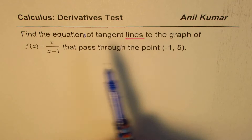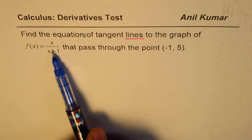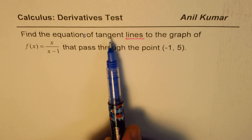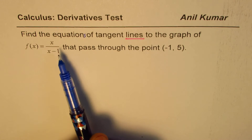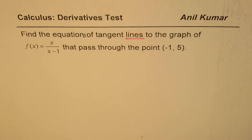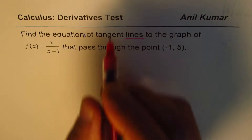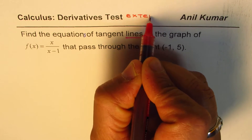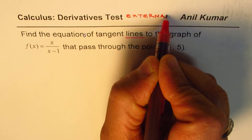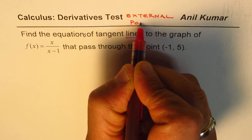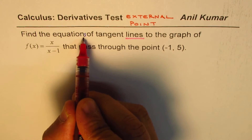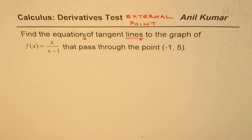Now, if the point is on the graph, we could only draw one tangent line. So more than one is possible if the point is not on the graph. That gives you an idea that we might be dealing with an external point. And when you read the question, such words help you understand that.